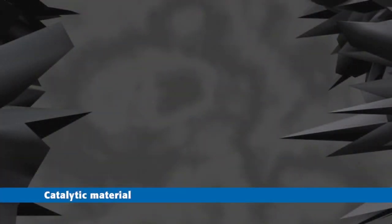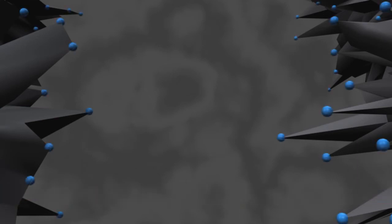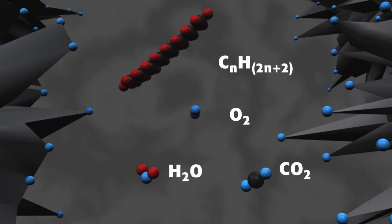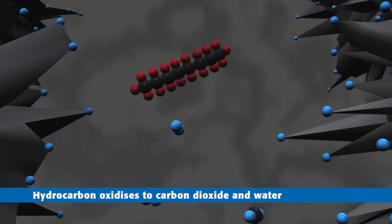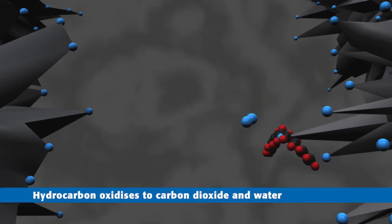The converter contains catalytic material that allows hydrocarbons to oxidize to water and carbon dioxide. At the start of the process, the air in the converter still contains hydrocarbons and thus also oil constituents. The catalytic material starts a chemical reaction during which the hydrocarbons are broken down into carbon dioxide and water.